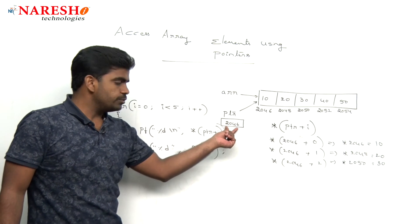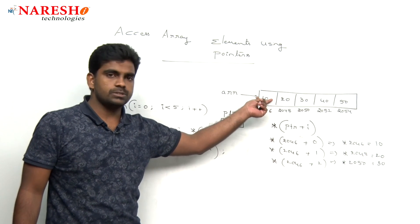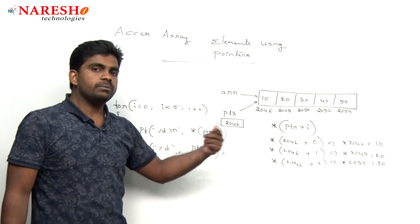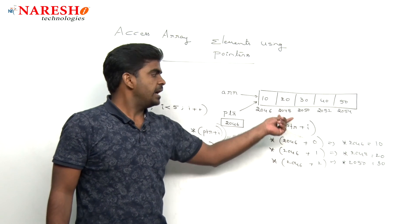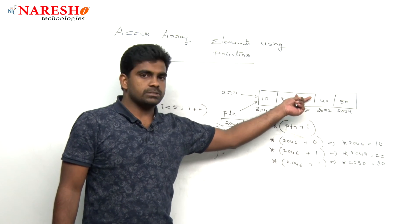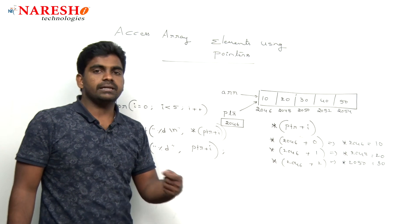PTR value is 2046 plus 0 is 2046, it will scan that value into this location. Next, i value will be increased, then the value becomes 2048 and it will go and store. Next one is 2050, it will go and store. This is how we are processing the data.